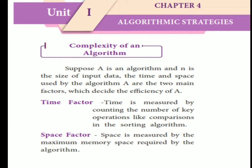Complexity of an algorithm: Suppose A is an algorithm and n is the size of input data. The time and space used by algorithm A are the two main factors that dictate the efficiency of A. Time is measured by counting the number of key operations like comparisons in a sorting algorithm. Space is measured by the maximum memory space required by the algorithm.